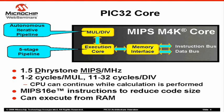By default, the PIC32 executes 32-bit instructions, which are designed to provide higher performance. If the application is code-size sensitive, it may use MIPS16E instructions, which are 16-bit wide. With MIPS16E instructions, an application can save up to 40% of code size compared to 32-bit instructions. There will be a reduction in performance when using MIPS16E instructions; however, with the 128-bit wide prefetch cache, some applications may see no adverse impact.